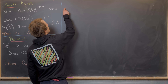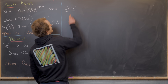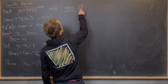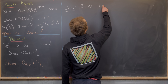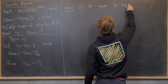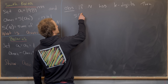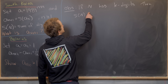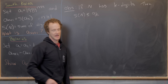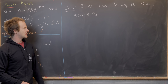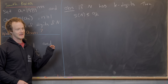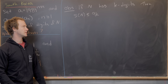The first observation is: if N has K total digits, then S(N) is less than or equal to nine times K. The equality comes when all of those digits are nines — nine, nine, nine, and so on.